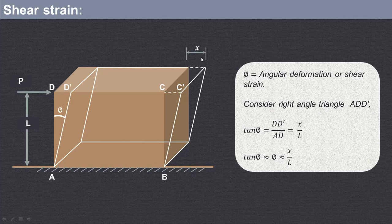If we consider the right-angle triangle A, D, D dash, then tan phi equals the opposite side D-D dash divided by the adjacent side L, giving tan phi = X/L. For smaller values, tan phi equals phi, which equals X/L, and this phi is known as the angular deformation or shear strain.